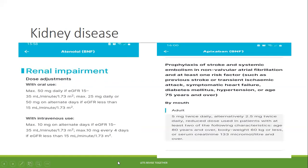Looking at the renal impairment section of the BNF, when you check the doses of the drugs you will find renal dosing listed there. If you check for Atenolol, it says maximum 50 mg if eGFR is 15 to 35, and maximum 25 mg daily or 50 mg on alternate days if eGFR is less than 15. Since eGFR is 31, the dose is okay — we don't need to make any changes.